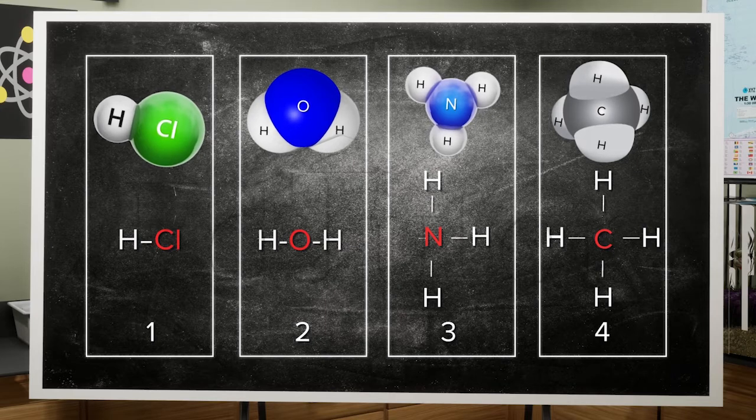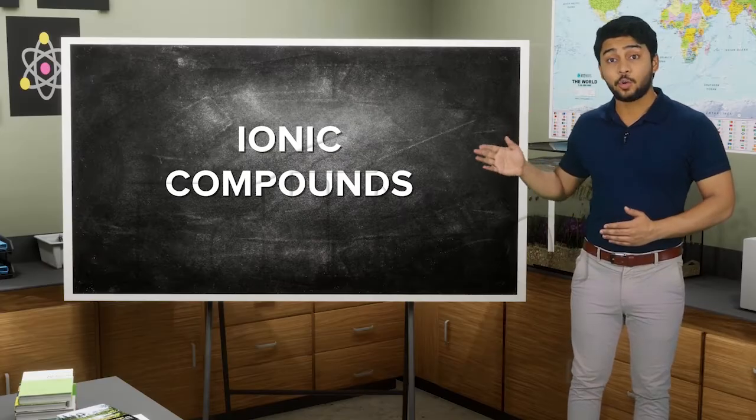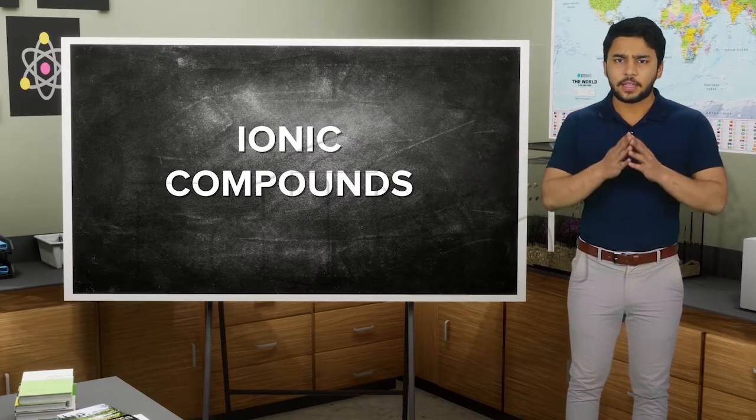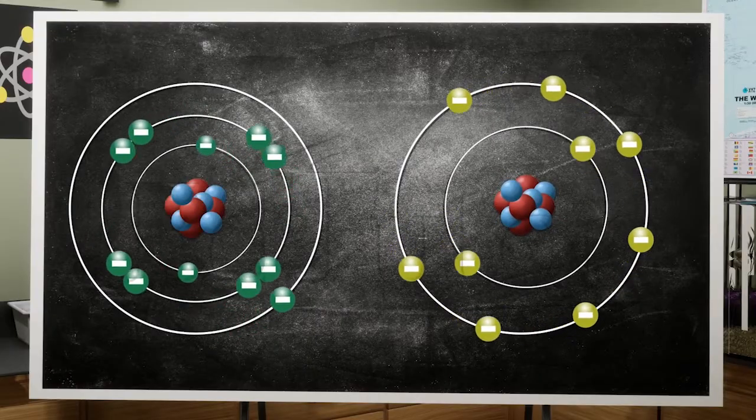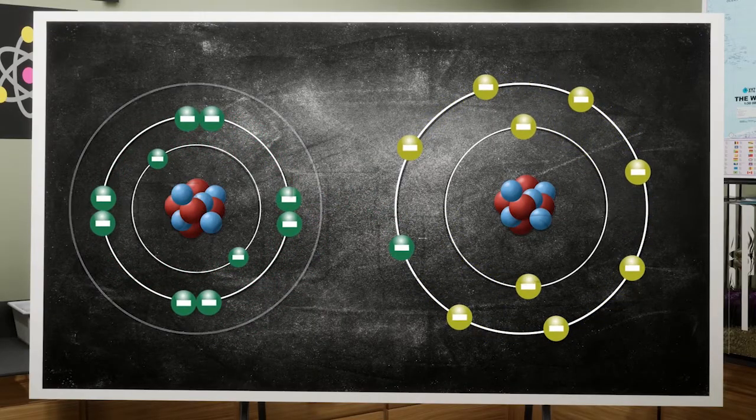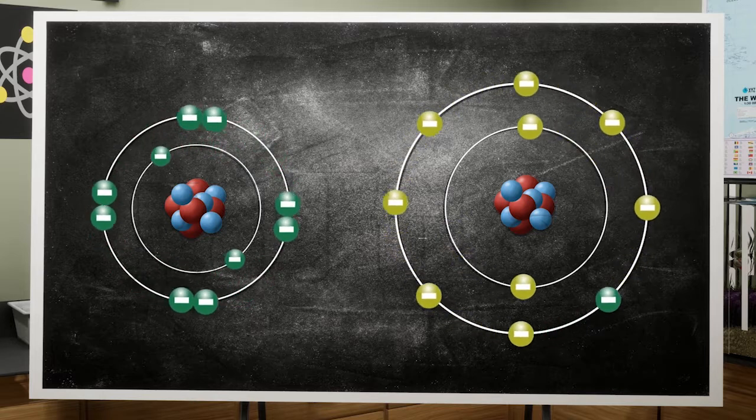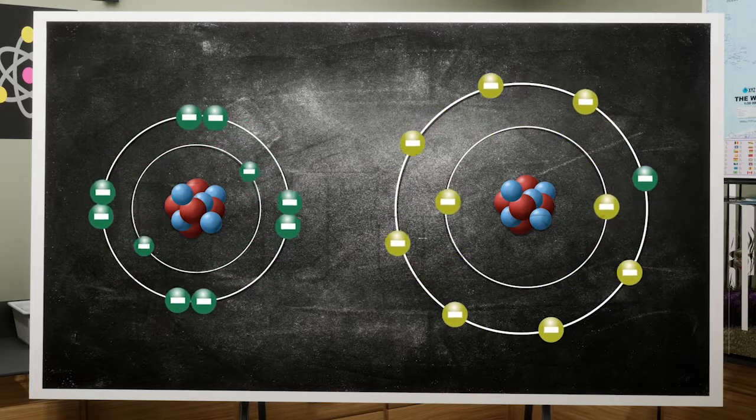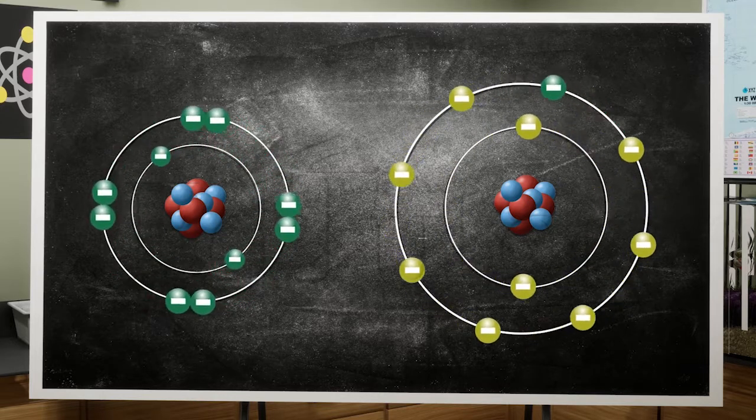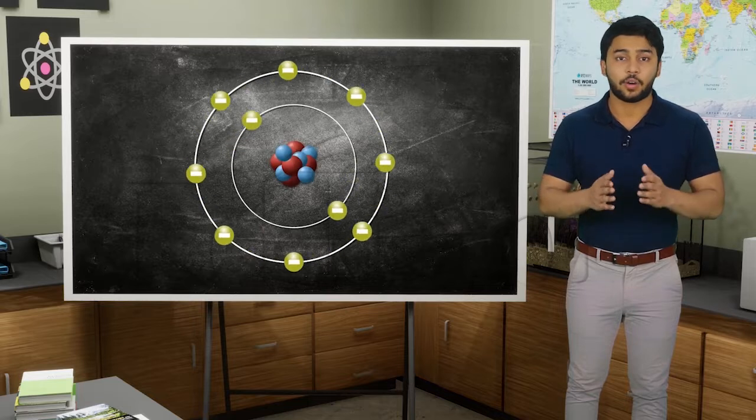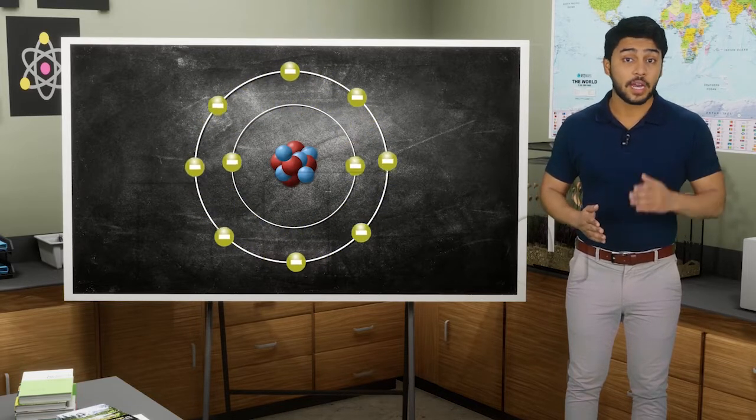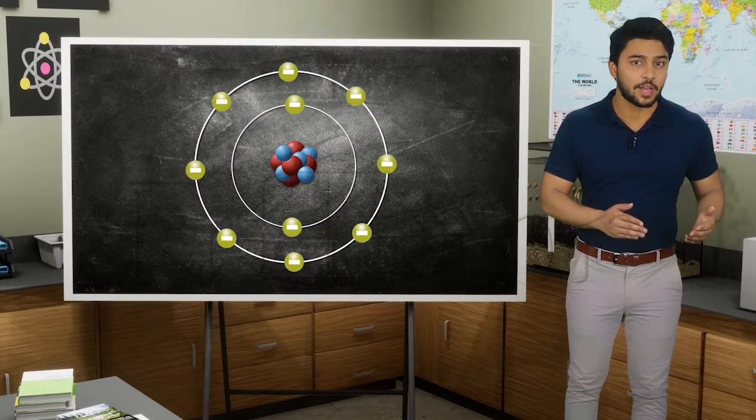I am going to introduce another term called ionic compounds. In these compounds, valency is represented by the number of electrons lost or added to complete eight electrons in the outermost shell of an atom. We call it octet, which means having eight electrons in the outermost shell.